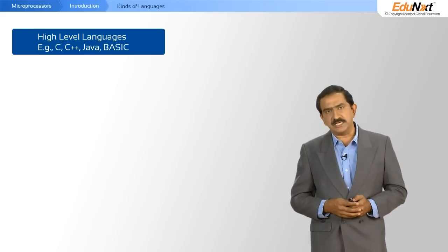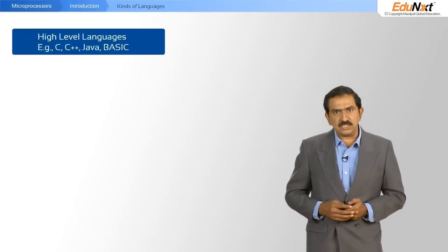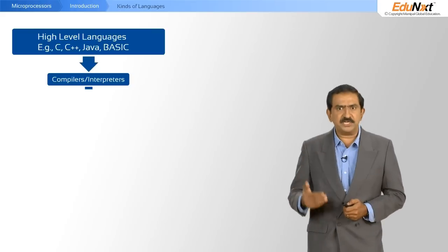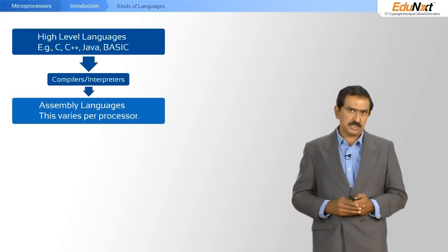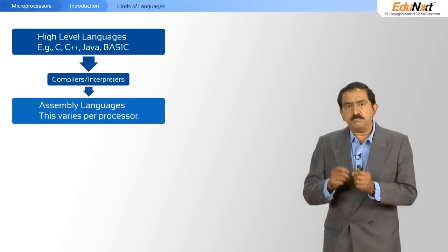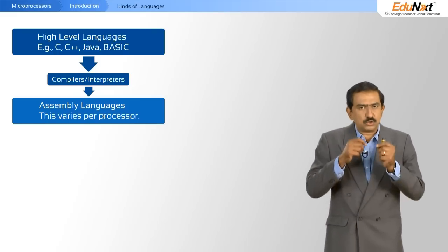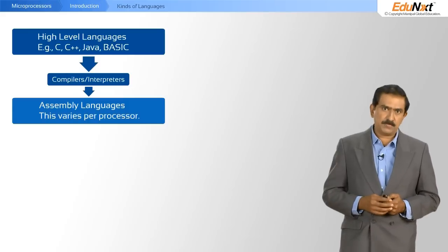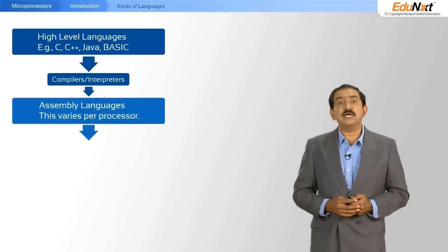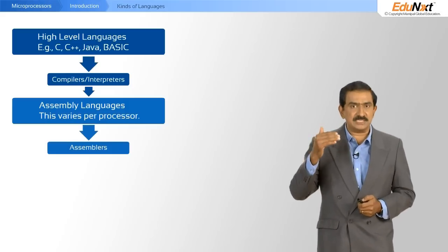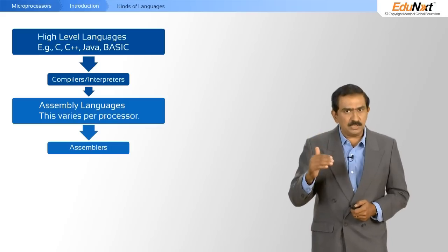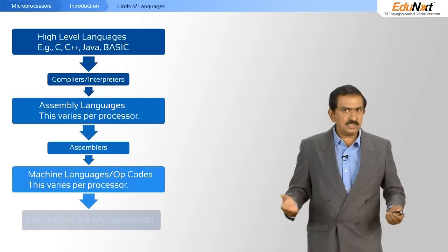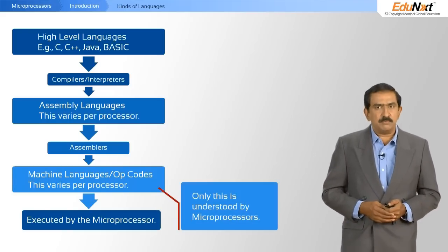Many of you would be familiar with these kinds of languages. But this language is not something that the processor can understand. What you need to do is then to compile it. And when you compile it or interpret it, you come down to what are called assembly-level languages. Assembly-level languages are very processor-specific. So an 8086 has its own assembly language. It cannot be understood by processors from other manufacturers. But the assembly language also cannot be understood by the processor. The assembly language has to be assembled. And only after it is assembled by an assembler, do you get what is called machine code or opcodes. And it is these machine codes and opcodes that are understood by the processor.